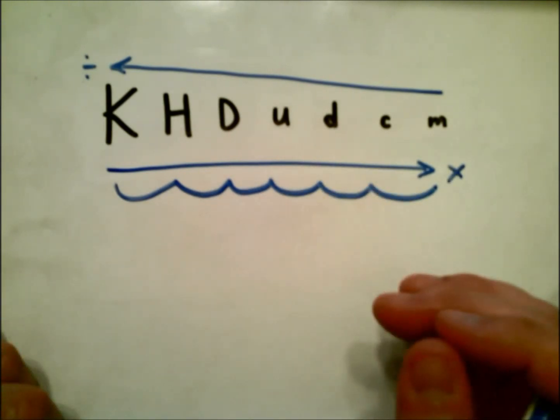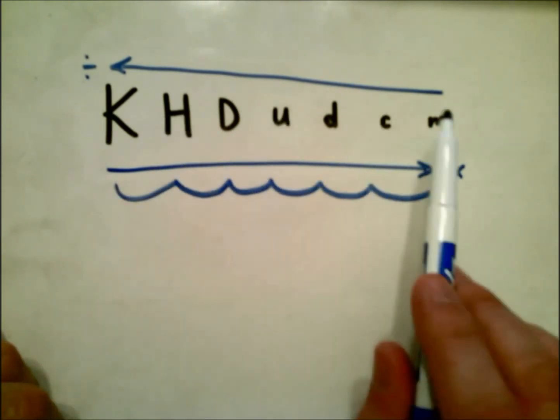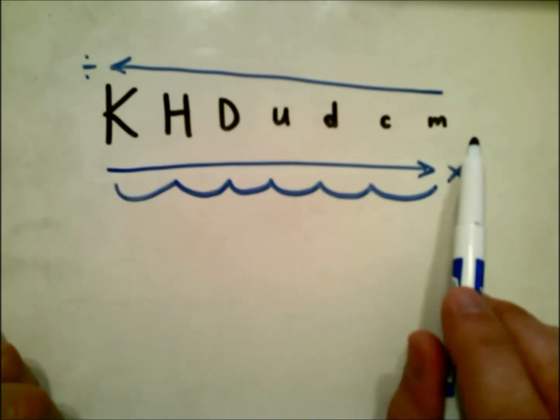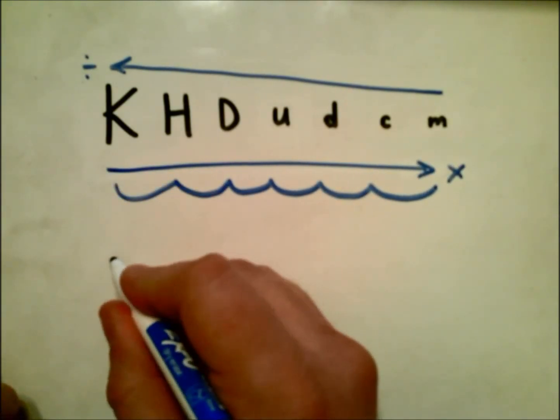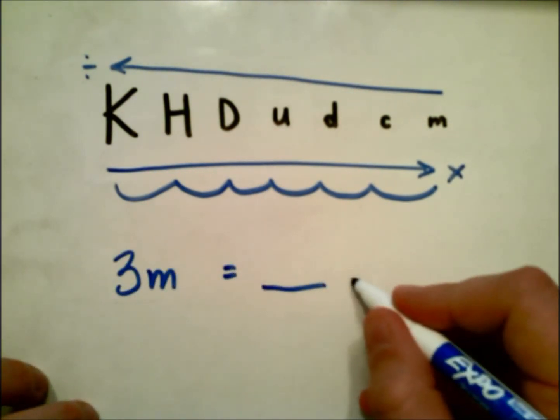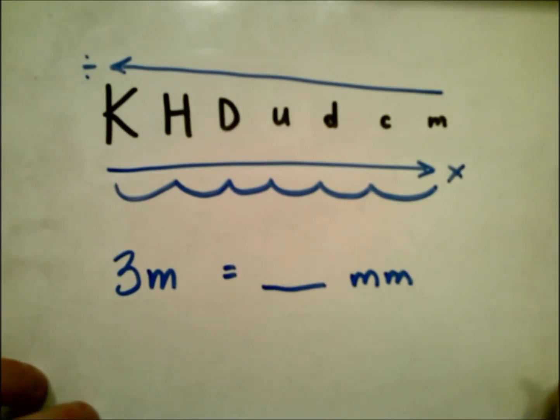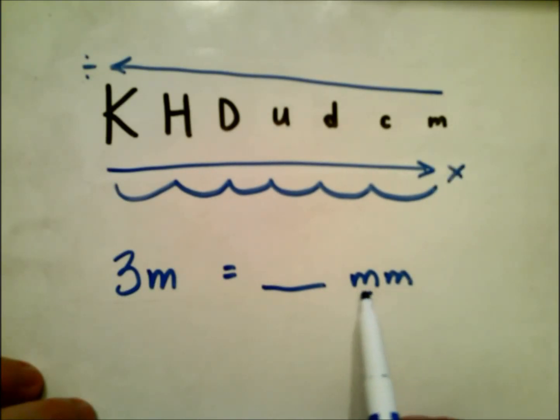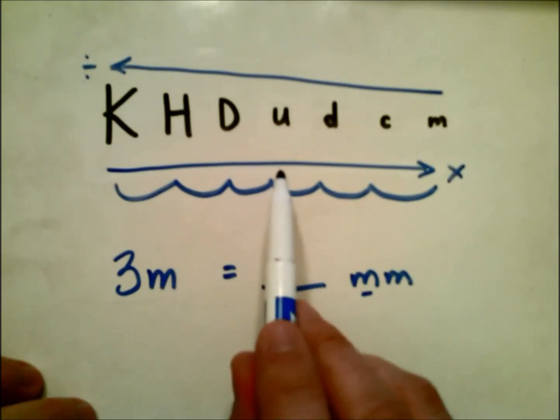So when we're talking about these numbers, one thing we can do is we can jump our decimal down the line as many times as we're going to go. So let's say we had three meters and we need to figure out how many millimeters. Now I know three meters—don't be confused because I know this is an M, but that's a milli. That's this guy. That's the prefix.